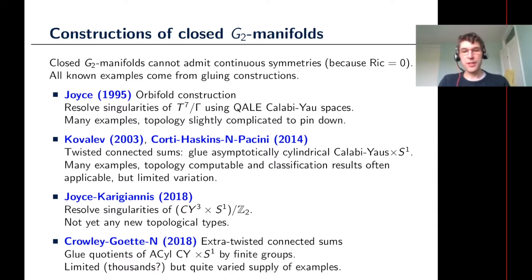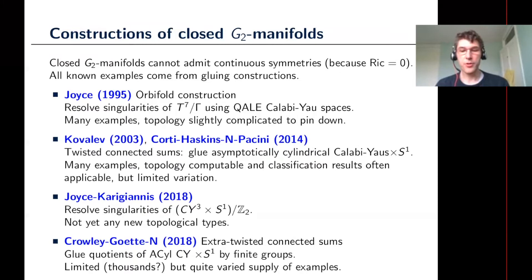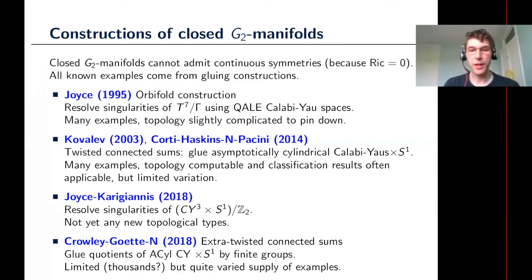Another recent construction is a variation of Joyce's construction where instead of resolving quotients of a flat torus, you resolve quotients of a Calabi–Yau times a circle. So far that construction hasn't actually been used in earnest to construct new topological types. Finally, there's a recent modification of the twisted connected sum construction where you take quotients by finite groups before gluing together the asymptotically cylindrical pieces. The supply of examples is a little limited, but the topological features that can appear become a lot more varied than in the ordinary twisted connected sum construction.